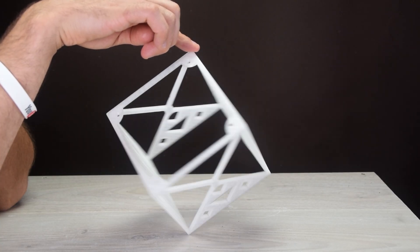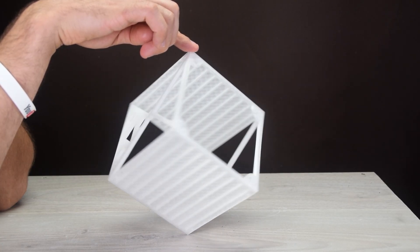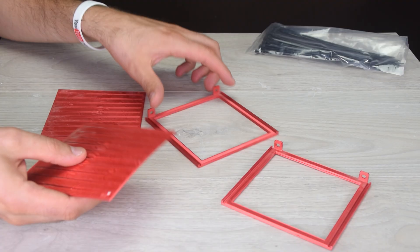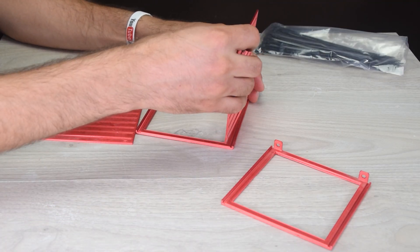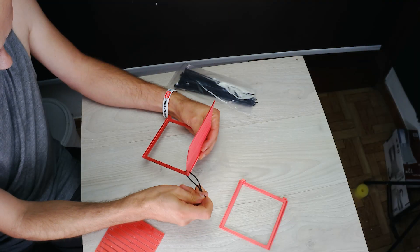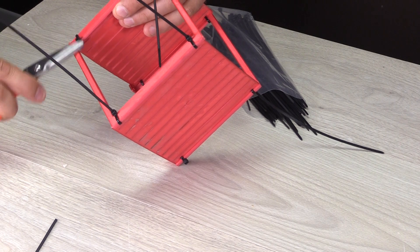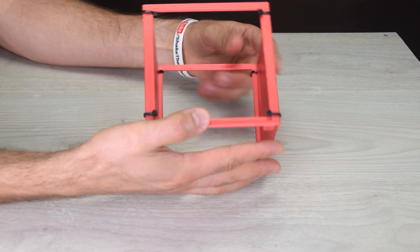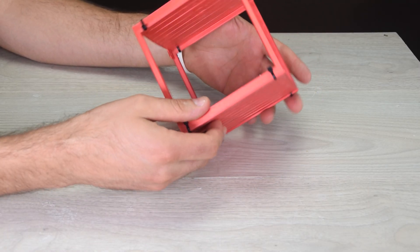You can choose between two designs, a single cube that prints without supports or a cube that you assemble from four pieces by zip tying them together. Whichever design you choose the procedure is more or less the same.